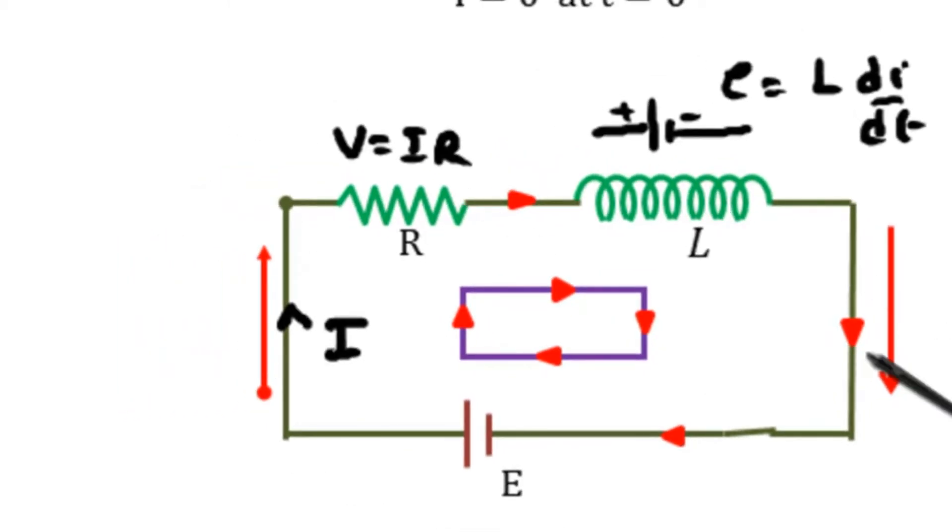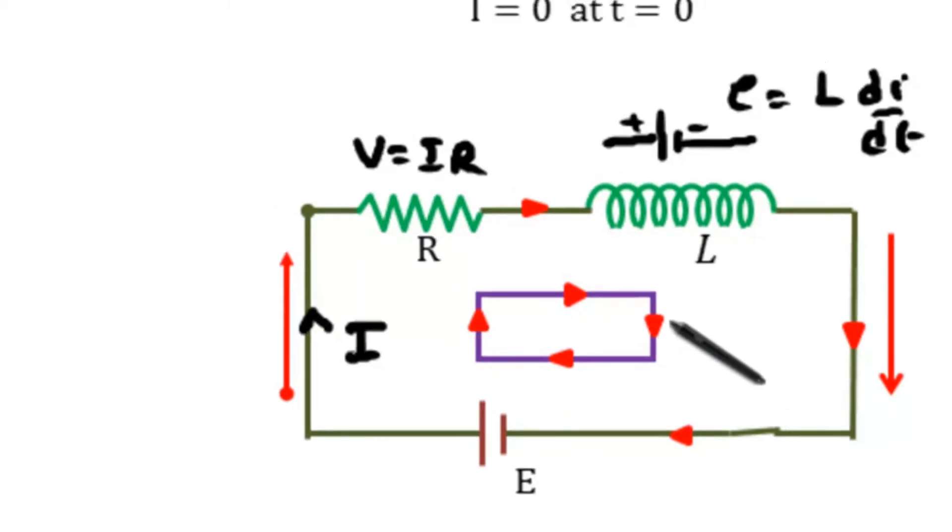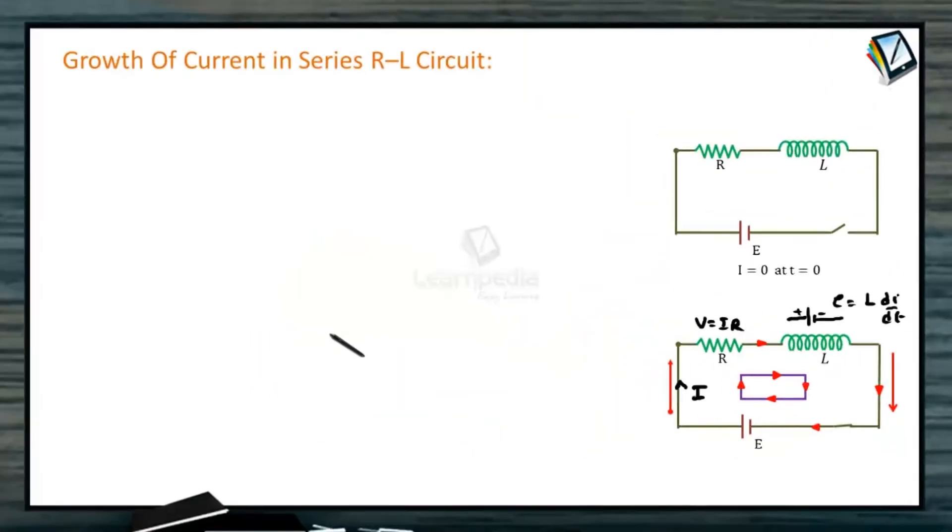Total EMF is E. The current starts circulating. The induced EMF is in the opposite direction. The current moves clockwise. Using Kirchhoff's loop rule, we can write the equation as E minus IR minus L di by dt equals zero.